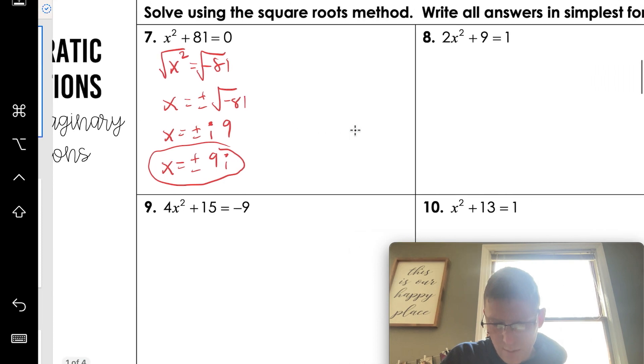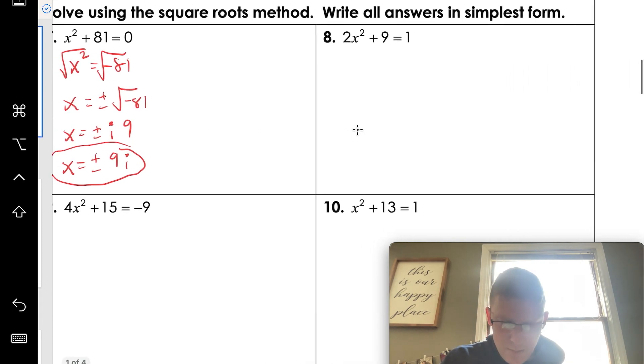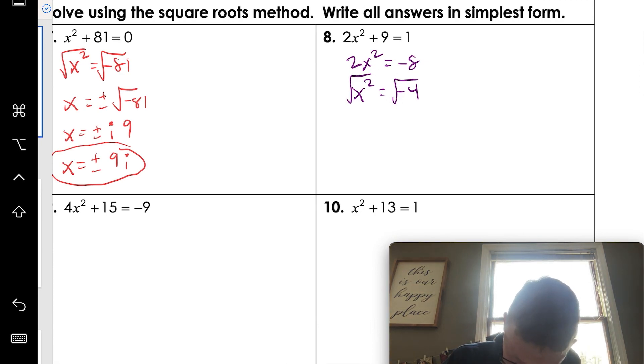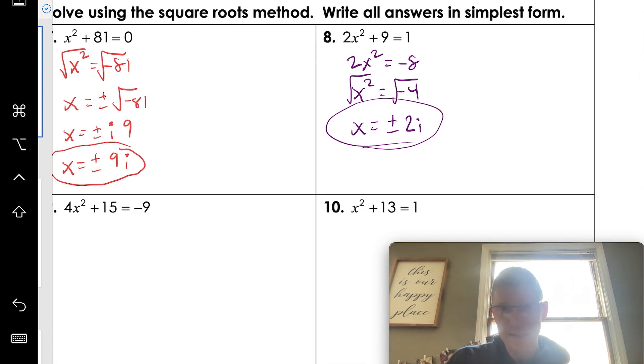So if we go over to number eight, it's going to be the same thing. Oh no, there's another number. That's fine. So we've got two x squared equals negative eight. So I just subtracted nine to both sides. We're going to divide both sides by two, x squared equals negative four. We're going to square root both sides. So we're going to have x equals plus or minus, the square root of four is two. The square root of negative one is i. So we're going to have two i. It's as easy as that.